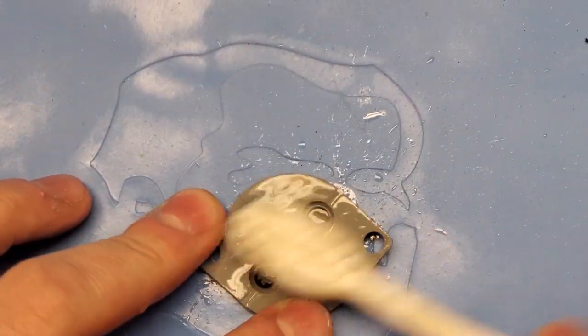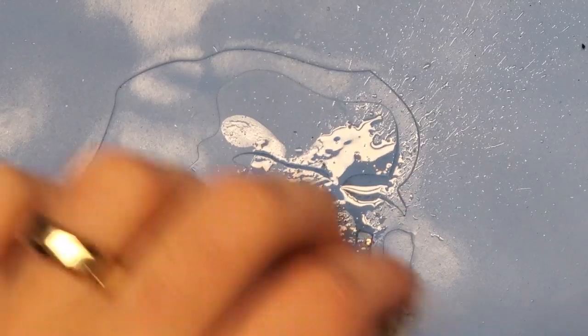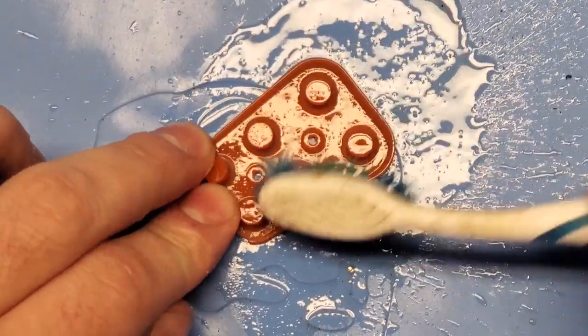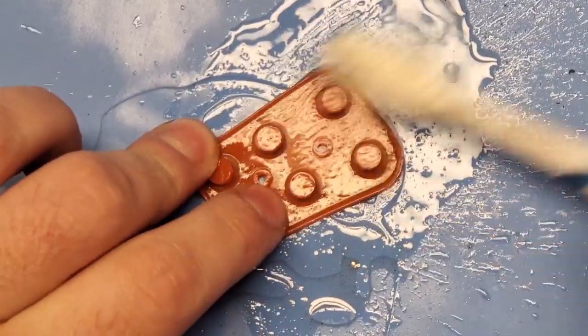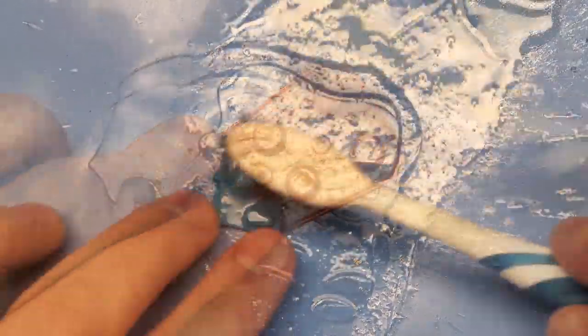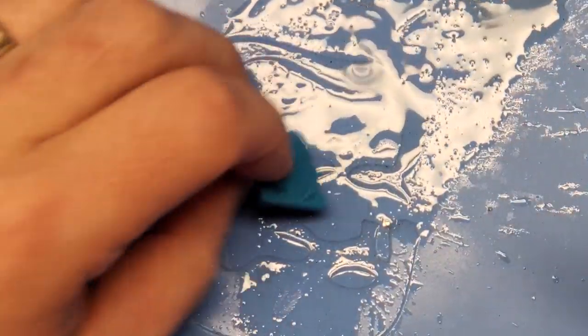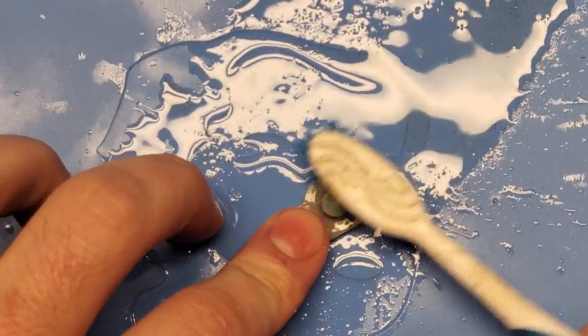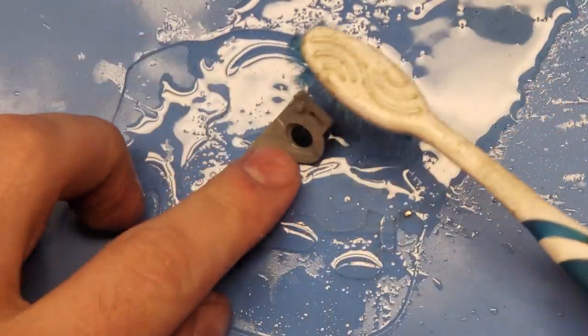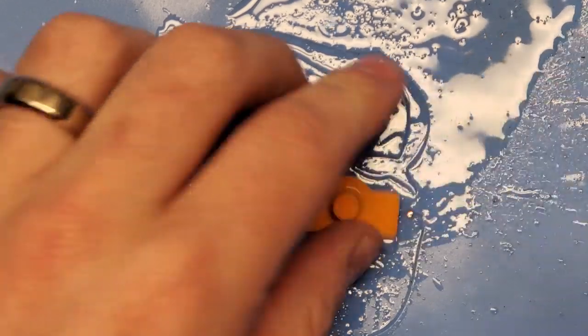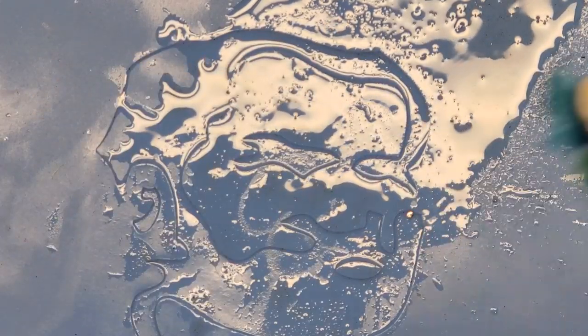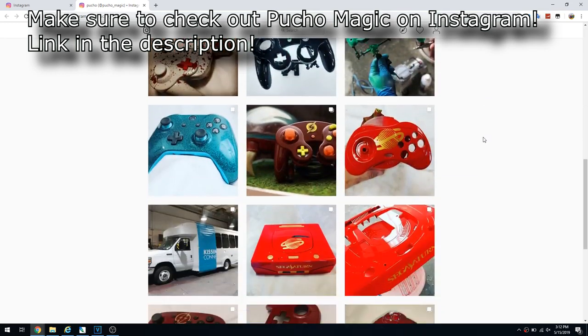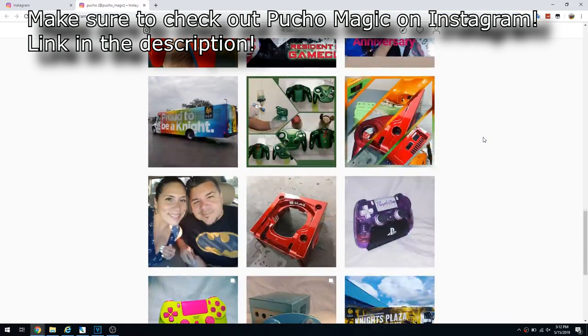With the controller completely ripped apart, I've gained access to all the different contact pads and I'm going to take some time to clean those up. I'm using some 99% IPA to do this and a toothbrush. With those pads all nice and clean, I'm going to set them off to dry and send the shells to my buddy Pucho Magic. Pucho does some absolutely amazing custom artwork on consoles and controllers. You guys should check him out on Instagram, he's totally worth a follow.